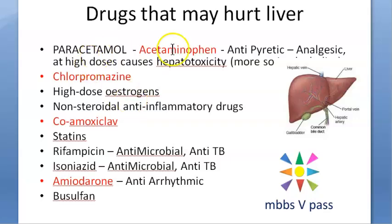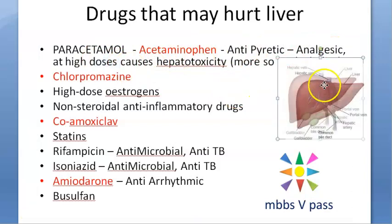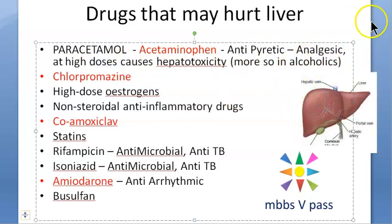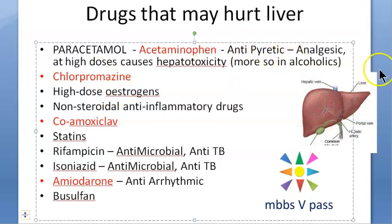Let us learn this list. Acetaminophen, that is paracetamol, is an antipyretic and analgesic. At high doses it will cause hepatotoxicity — more so in alcoholics, since they have already damaged their liver with alcohol.